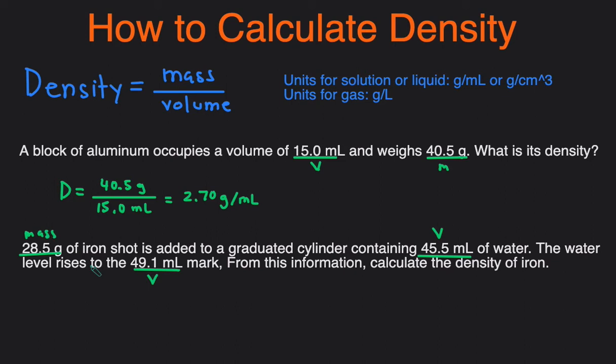So we have the mass of the iron, we don't have the volume of the iron yet, but we have the volume before we added the iron and the volume after. So the difference of the volume is just the volume that the iron takes up.